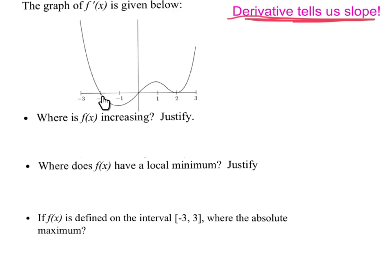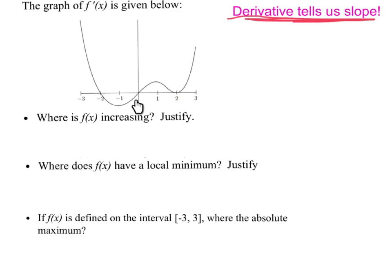When f prime is zero, that means the slope of f is zero, meaning it has a maximum, minimum, or just a horizontal tangent. When f prime is negative, the slope of f is negative and f is therefore decreasing. When f prime changes from positive to negative, f changes from increasing to decreasing, meaning this represents a maximum in f. When f prime changes from negative to positive, f changed from decreasing to increasing, meaning this spot represents a minimum in f.